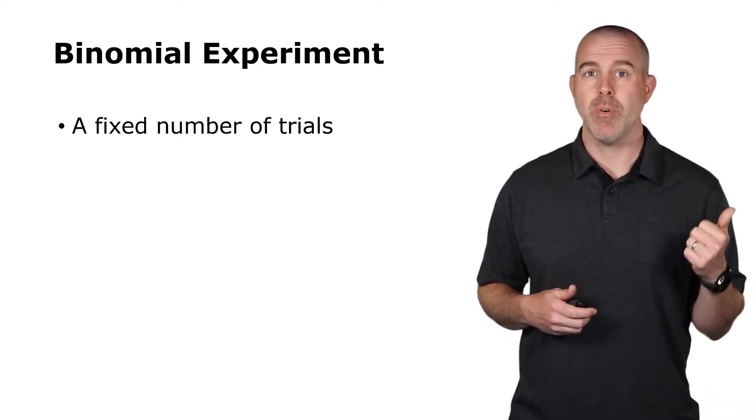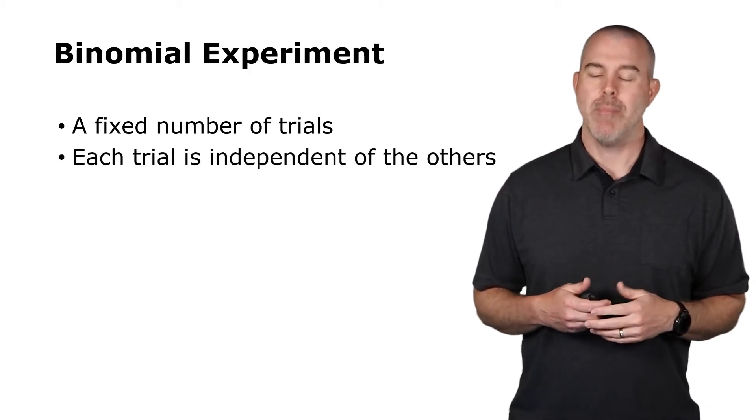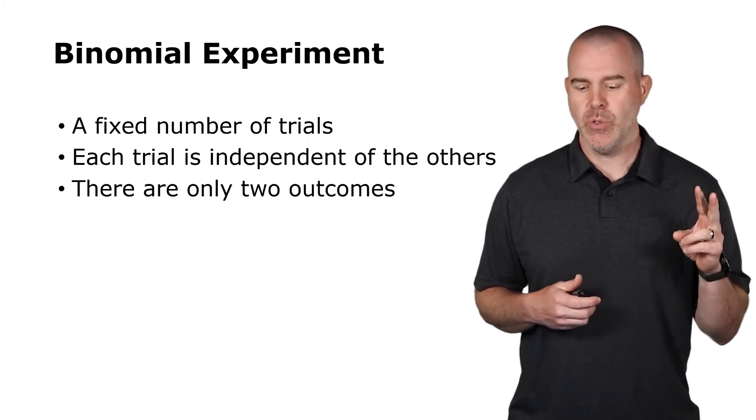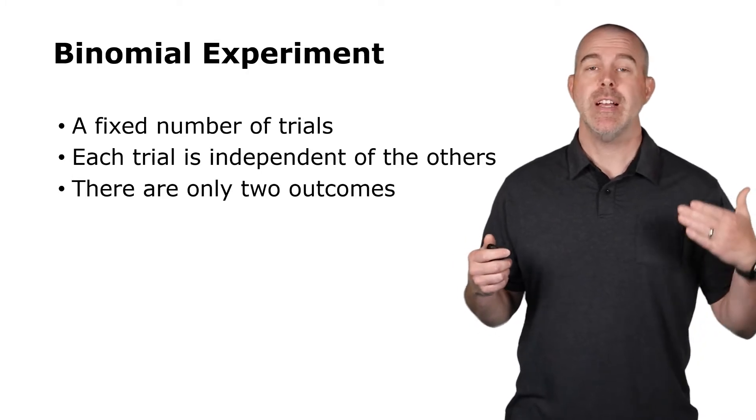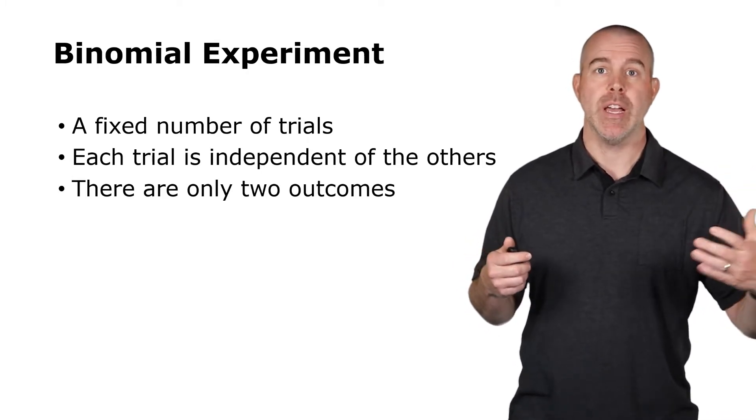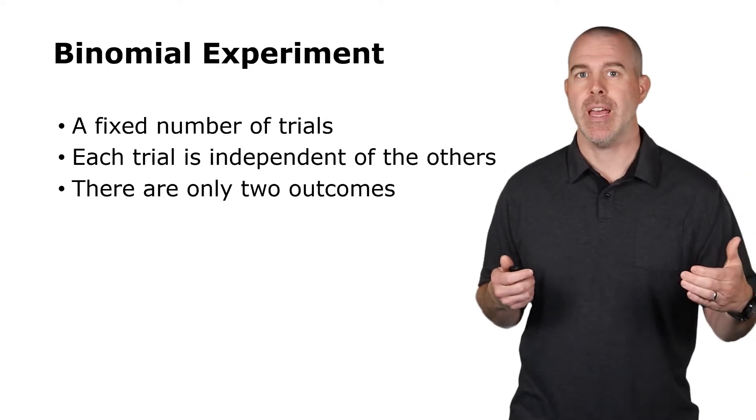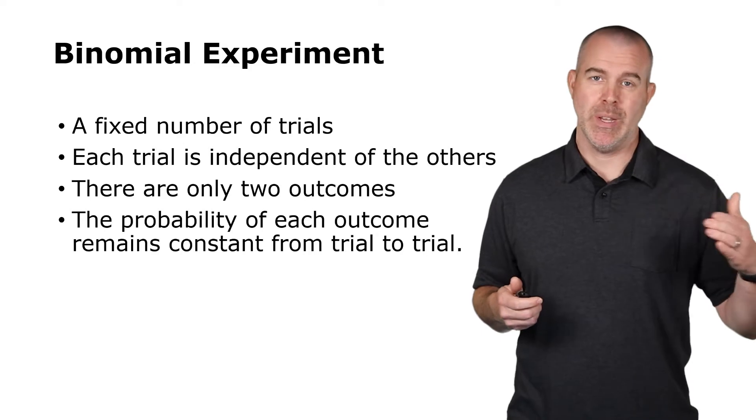Those are the four characteristics of a binomial probability experiment. You have a fixed number of trials, so you're rolling the die a set number of times. Each trial is independent of the others. There are two outcomes, success and failure. Now, I use those terms in a probability sense. Success is whatever it is you're counting. It doesn't necessarily mean something good, but it's whatever it is you're counting. And then lastly, that probability of success is constant between the different trials.